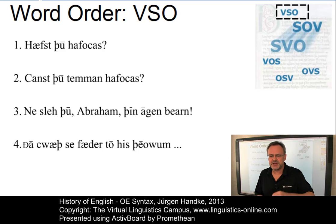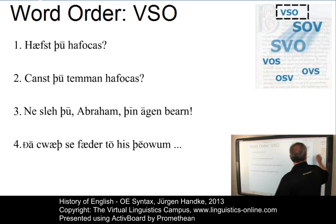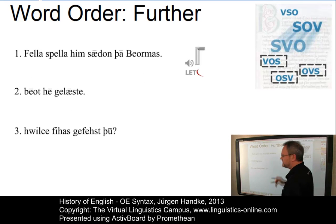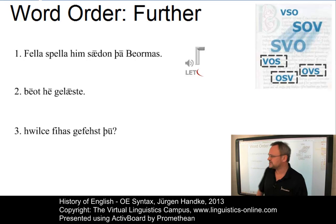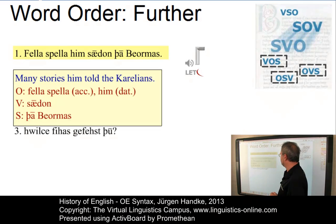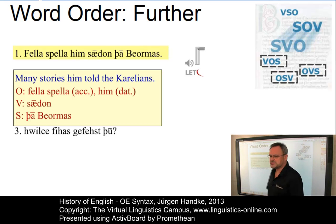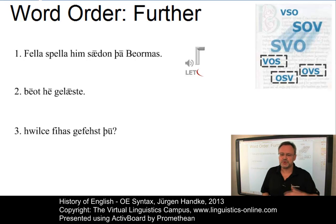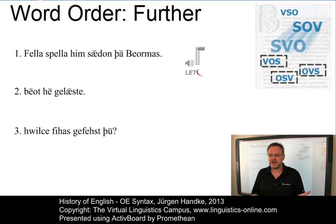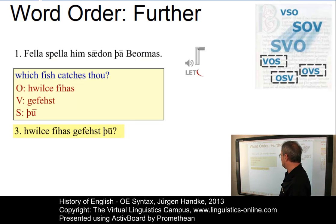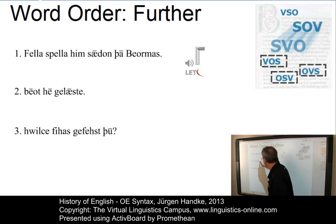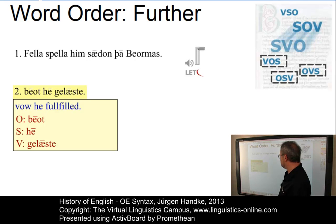Word order patterns such as OVS, VOS, and OSV all appear in Old English texts, but they are relatively rare. In prose, an example of OVS is 'Fela spella him sardon thabernas' — meaning 'Many stories him told the Karelians' — clearly object-verb-subject order. OVS often occurred in WH questions, and there are also OSV examples.